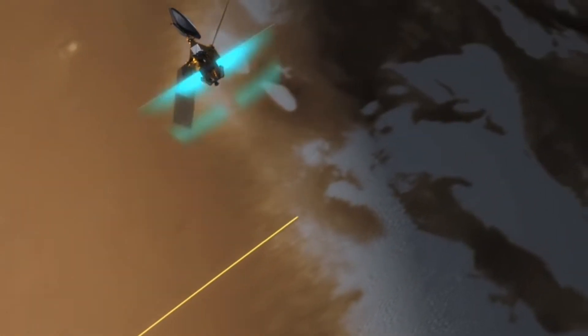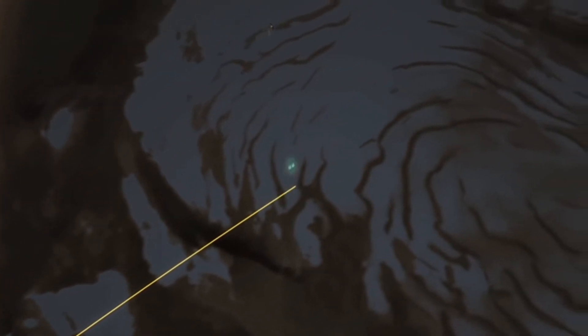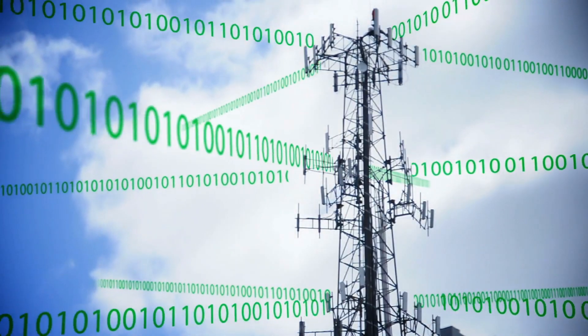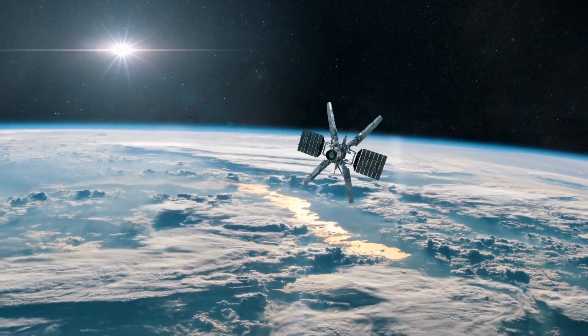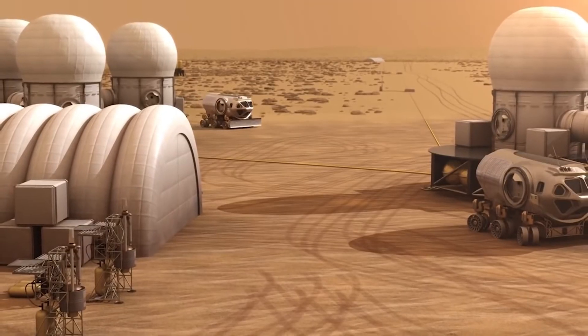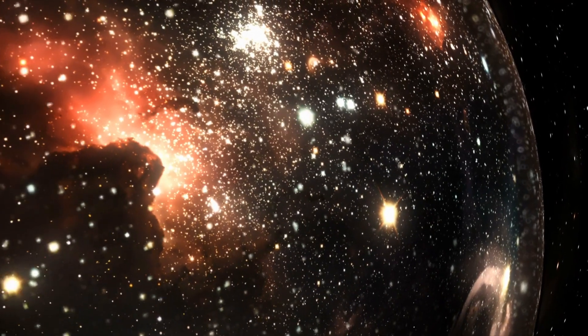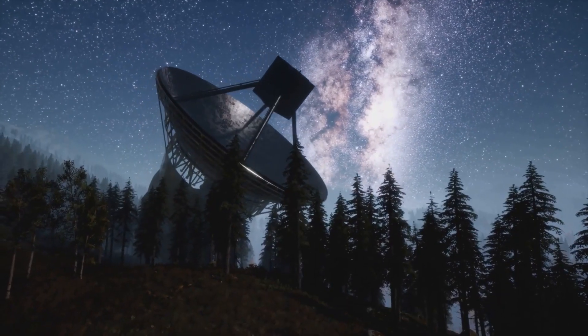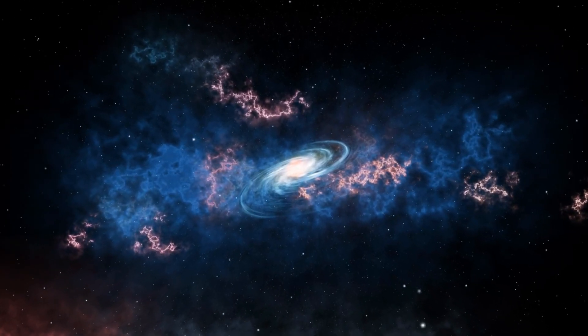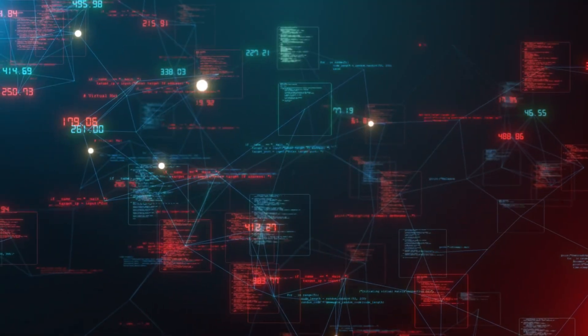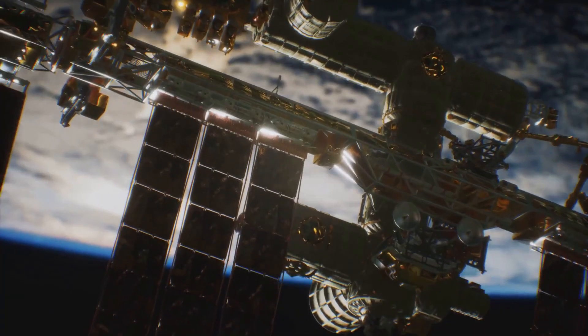The idea of the interstellar internet might sound like science fiction, but the seeds of this concept are already being sown. Traditional internet relies on earth-based infrastructure—fiber optic cables, satellites, and servers—but what happens when we aim to establish colonies on Mars, mine asteroids, or venture even further into the cosmos? An interstellar internet is essentially a network designed to work in the vast, challenging environment of space.